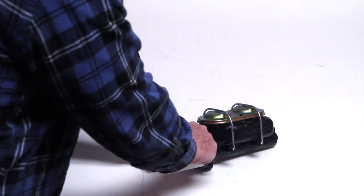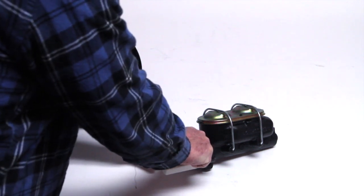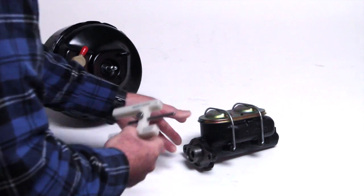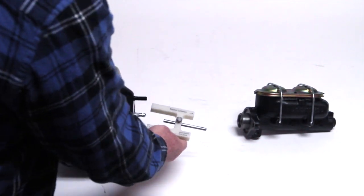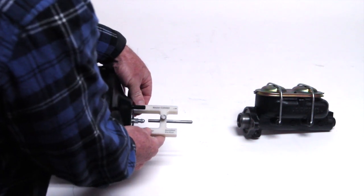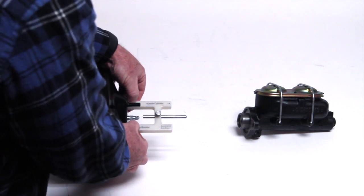Then once it's tight, you take the tool over to your booster and you put it up on the face of the booster to where it lines with the center shaft coming out of the booster. As you can see, this one's pretty far off.